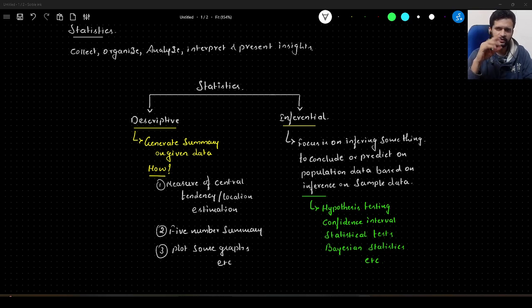Statistics is divided into two parts: descriptive statistics and inferential statistics. Within descriptive statistics, we generate a summary on given data. What kind of summary? It's usually the measure of central tendency, or location estimate, and what are the things we use in this?